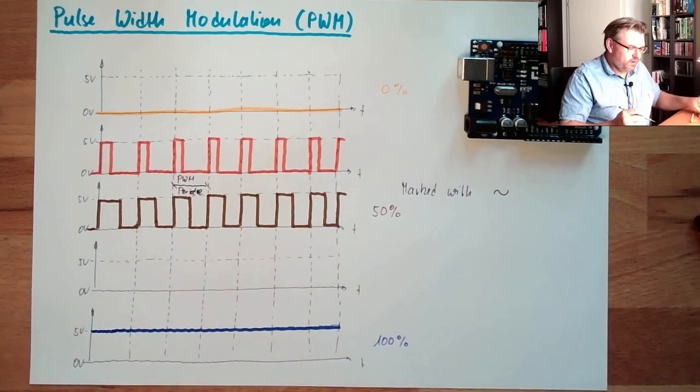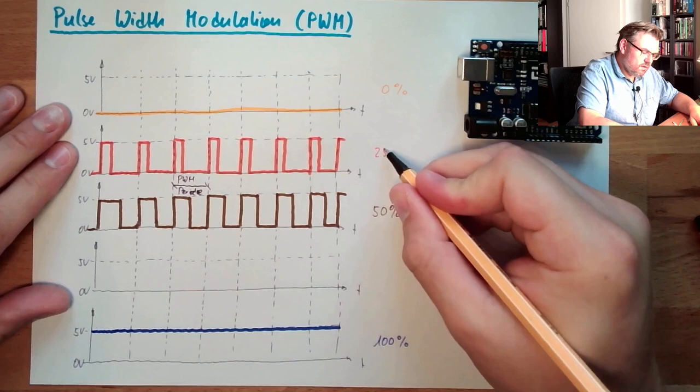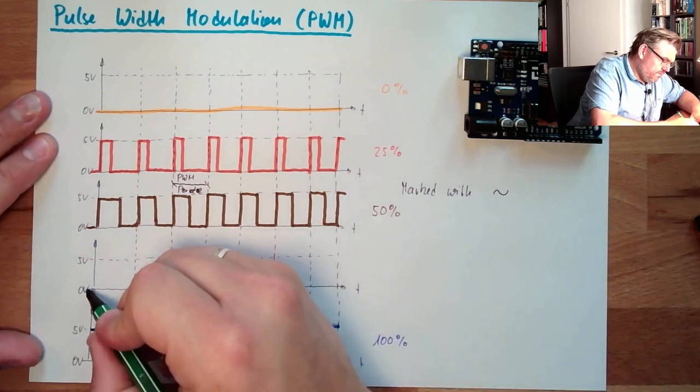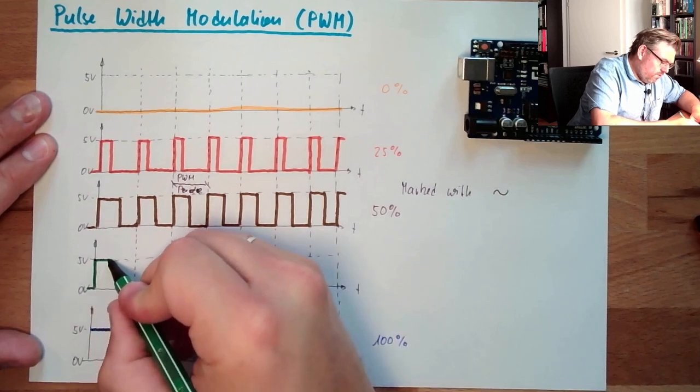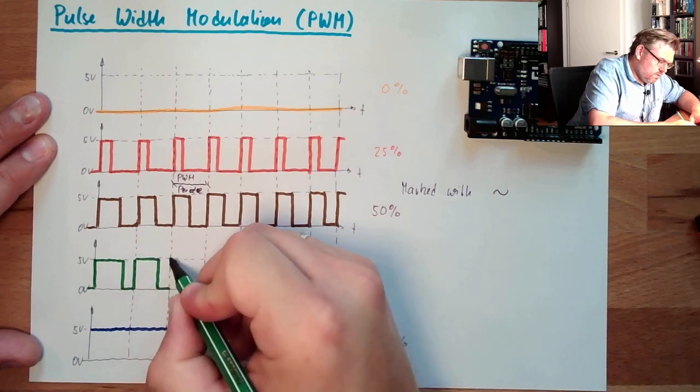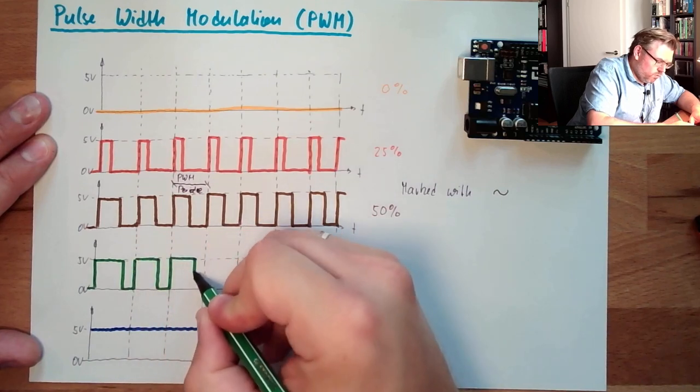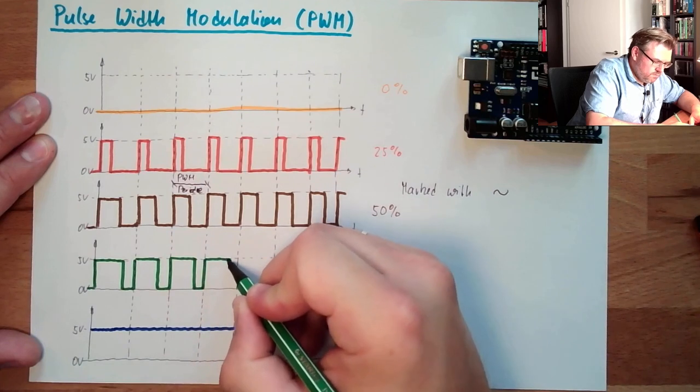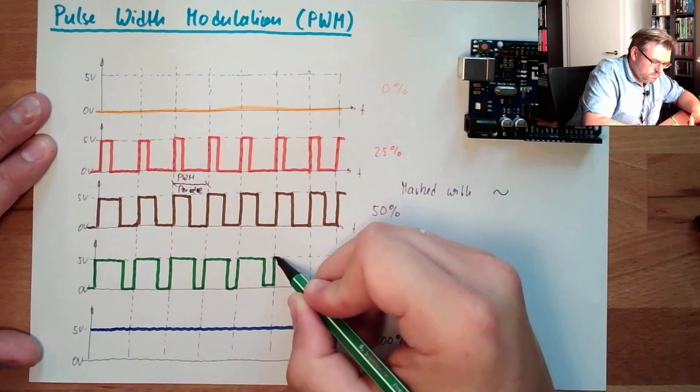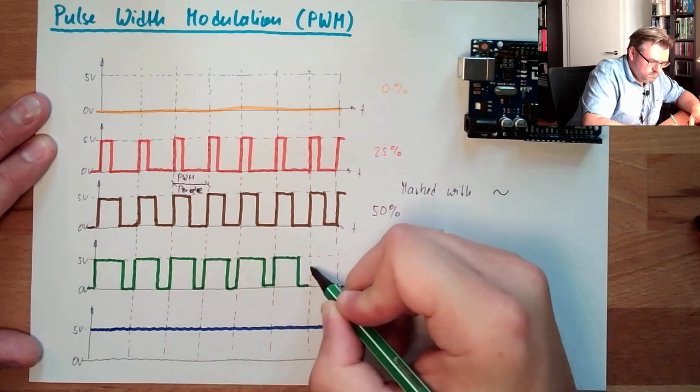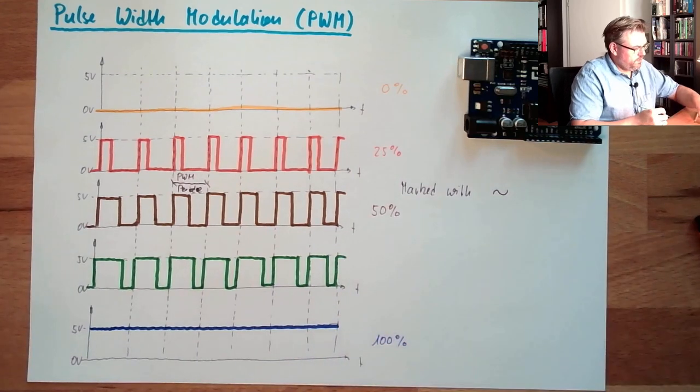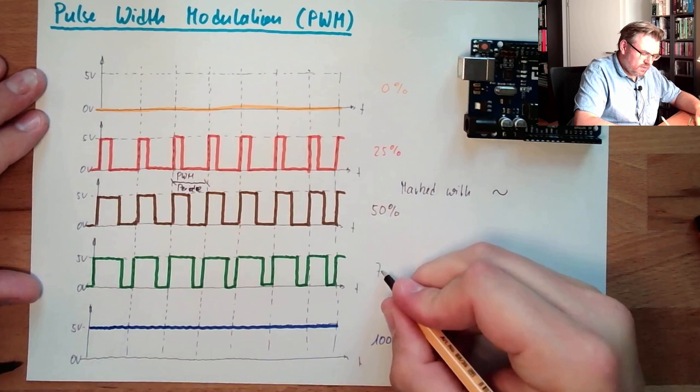And if we have, for instance, this is 25%. And if we have 75%, then there are only short pauses and the pulses are pretty long. So only a quarter of the time is turned off. So this would be 75%.